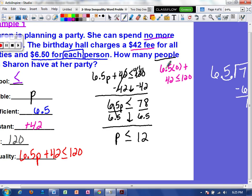So that means that 6.5 times 0 plus 42 should be less than or equal to 120. Well, we know that anything times 0 is 0. So I have 0 plus 42 is less than or equal to 120. And yes, 42 is less than 120. So now I'm just going to graph that.